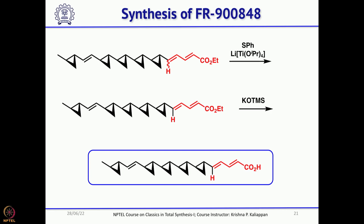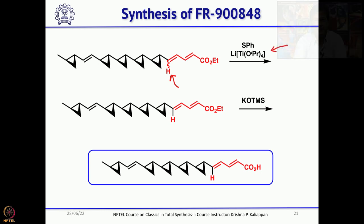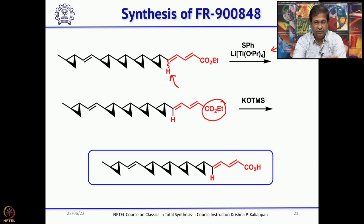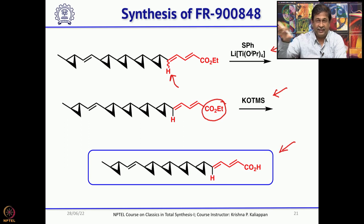A Wadsworth–Emmons modification of the Wittig reaction gave the diene ester. Again a mixture of E and Z was obtained, which was converted to EE using the same conditions already used twice. He then tried to saponify this ester to carboxylic acid, but all conditions gave decomposed product. Finally, he used KOTMS to hydrolyze the ethyl ester to carboxylic acid. This is the side chain that should be attached to the nucleoside, and the side chain is now prepared.